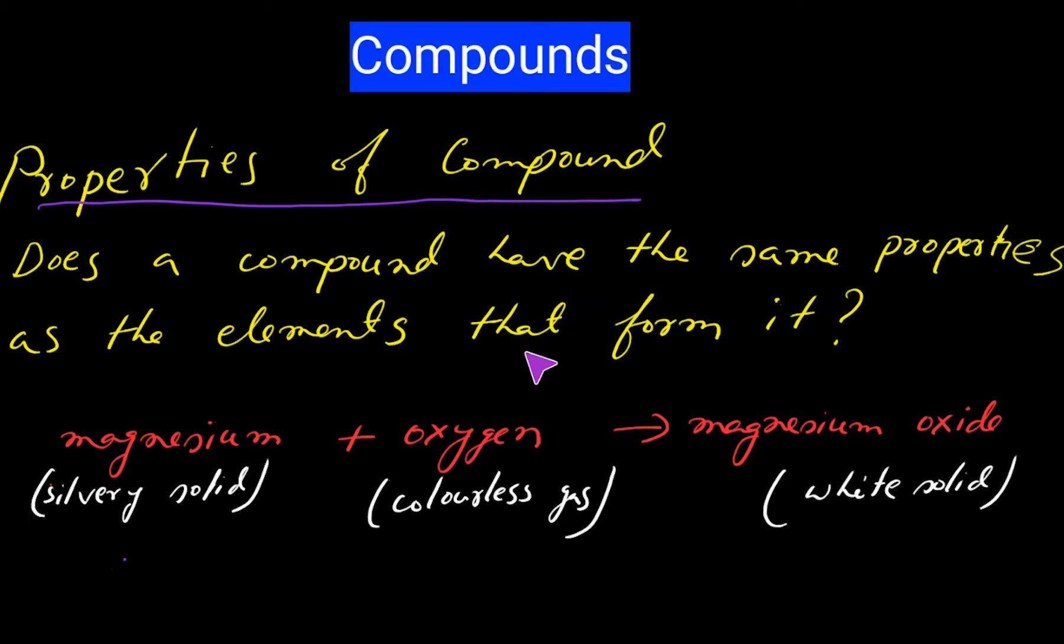Properties of compound: Does a compound have the same properties as the elements that form it? The answer is a compound has different properties from the elements that form it. For example, magnesium burns in oxygen to form a compound called magnesium oxide. Magnesium oxide has properties different from magnesium and oxygen. Magnesium is a silvery solid and oxygen is a colorless gas, but when they make a compound, it becomes white solid magnesium oxide.